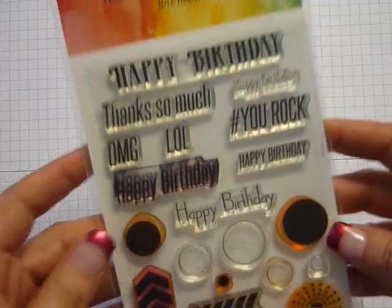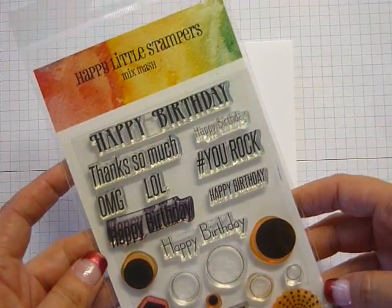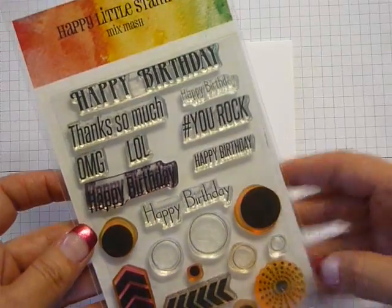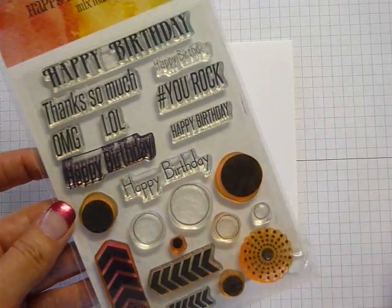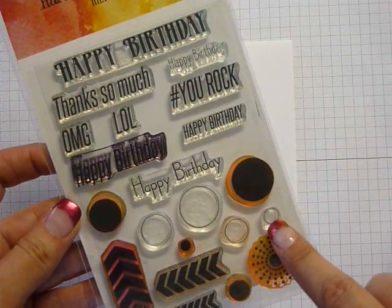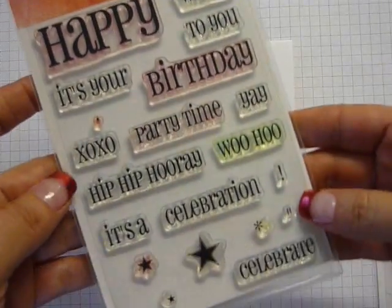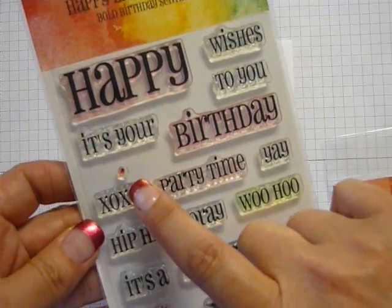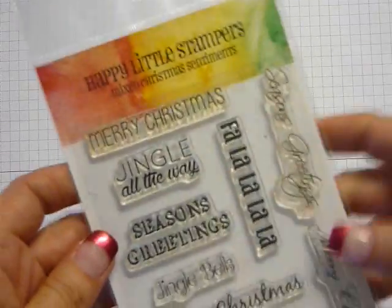I'm going to be using three sets from Happy Little Stampers today. The most important one is the Mix Mash set and I'm going to use the smallest three circles, the open circle outlines that I've shown you there. I'm going to use a very tiny full stop from the Bold Birthday Sentiments and this cool sentiment from the Mix Christmas Sentiments.